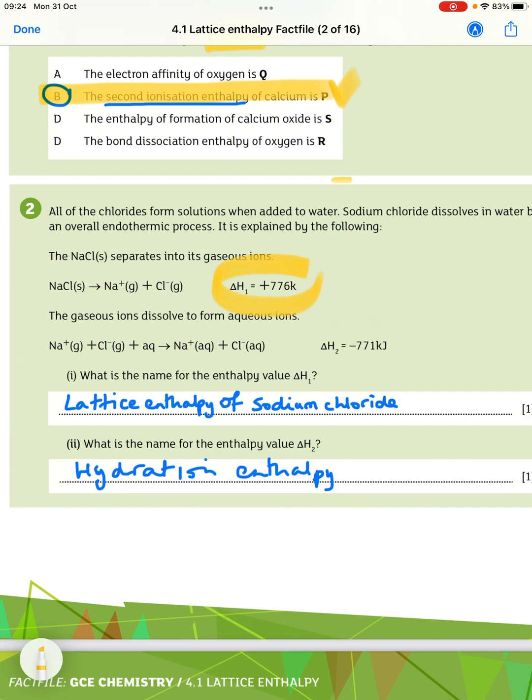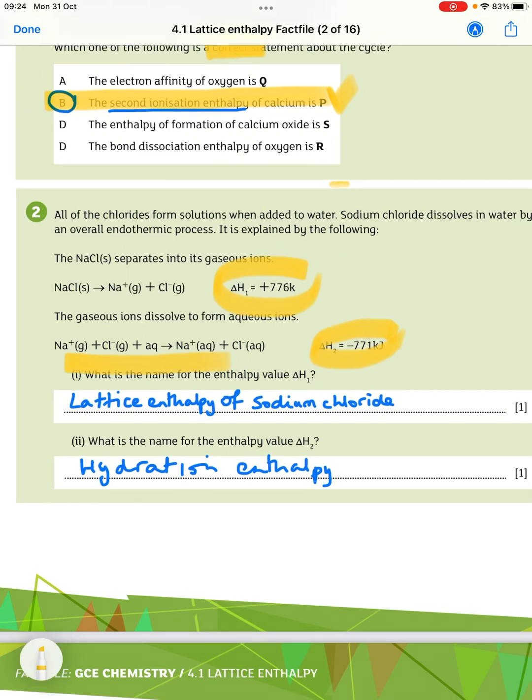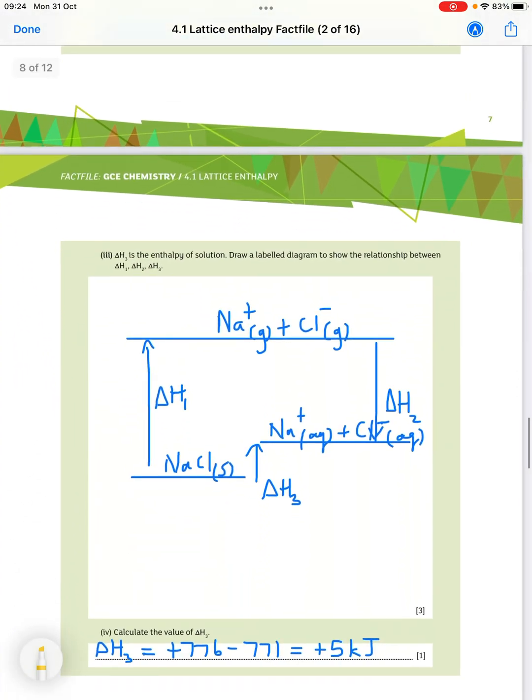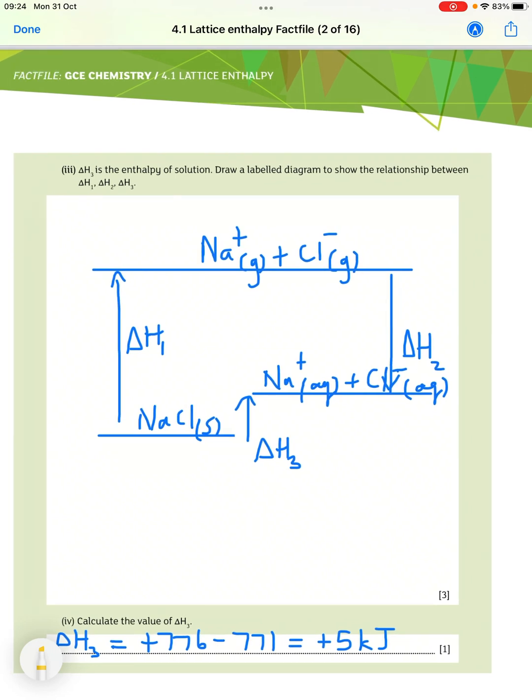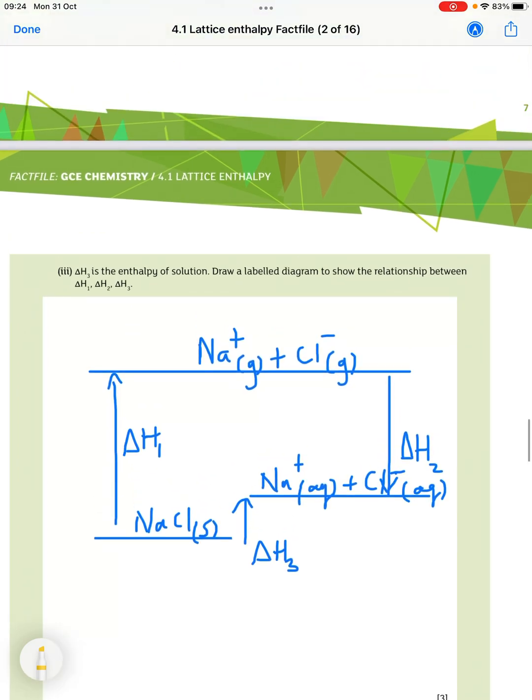So that is the lattice enthalpy of sodium chloride. And then for delta H2, this one here, it's the hydration enthalpy. Then it says delta H3 is the enthalpy of solution. Draw a labelled diagram to show the relationship between delta H1, delta H2 and delta H3.